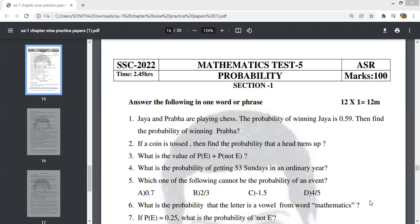This is test number 5. We already have real numbers, sets, polynomial, statistics. This is probability, and tomorrow we are going to discuss trigonometry.